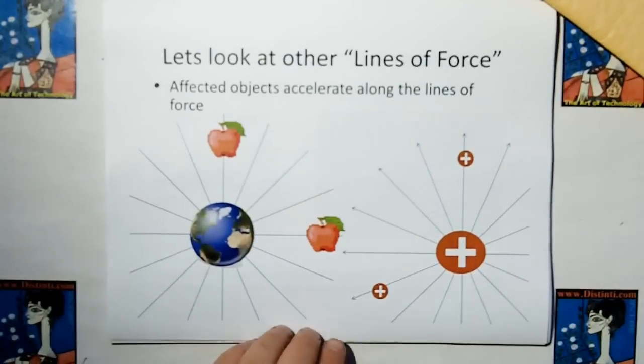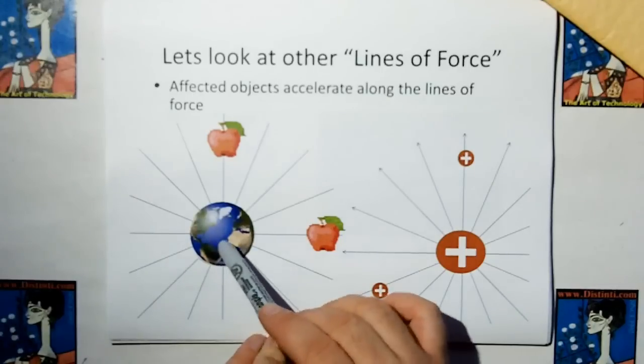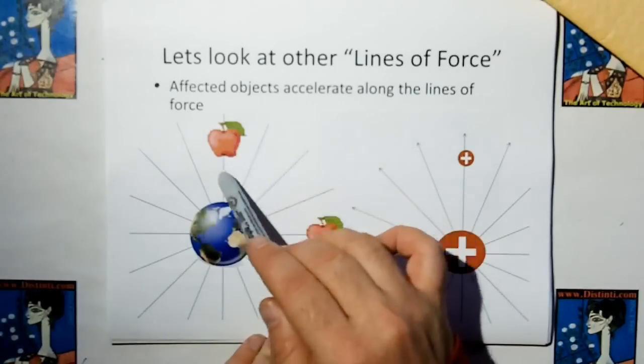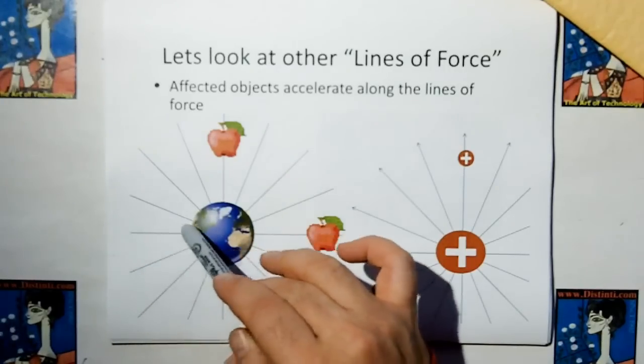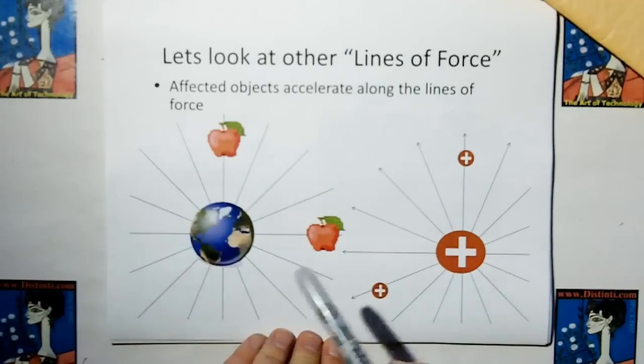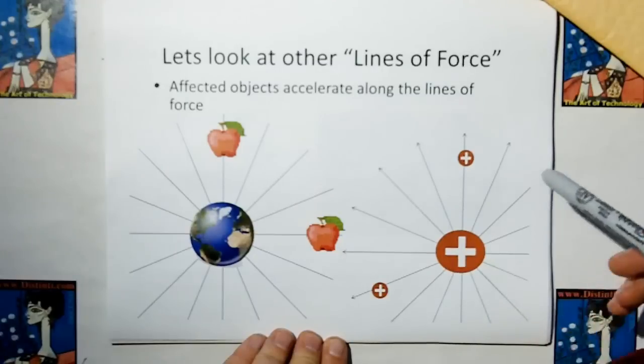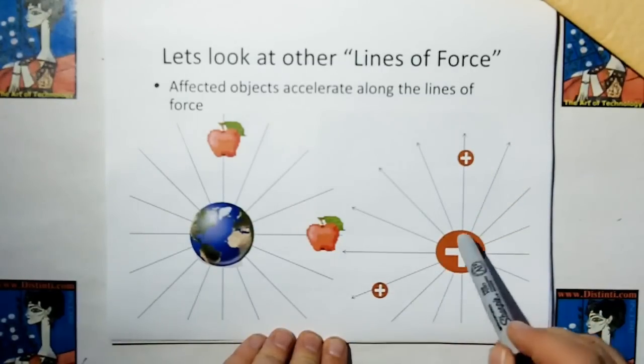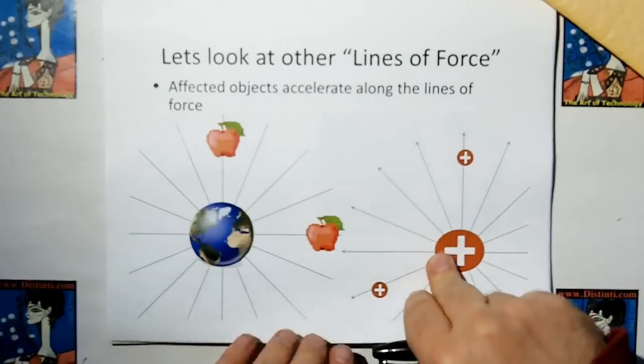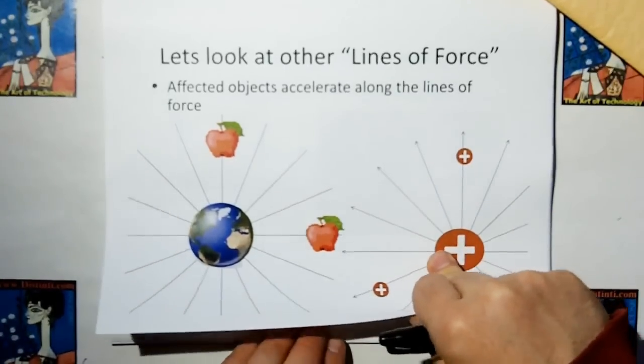So they call it lines of force. Let's look at some other lines of force. For a gravitational field, if we drop an apple, it falls along the line of force. For electrostatic field, if you have a light charge, it's going to fly away in the direction along the lines of force. That's where the term lines of force come from.